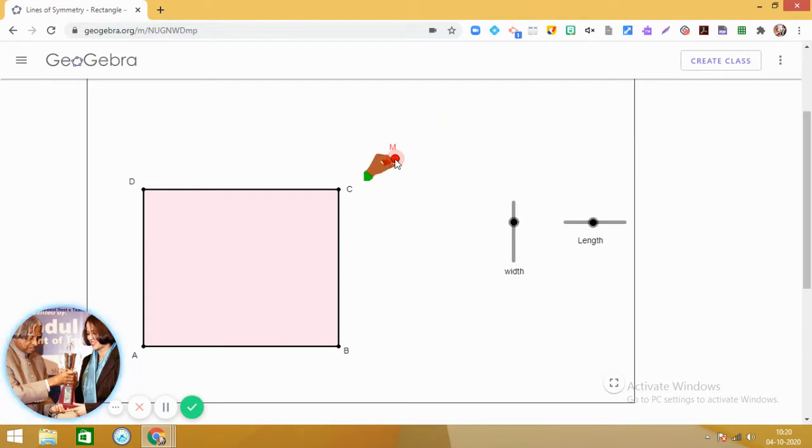So let us explore and fold this rectangle, rectangular shape into two parts. Are we able to get two parts which are exact replicas of each other?